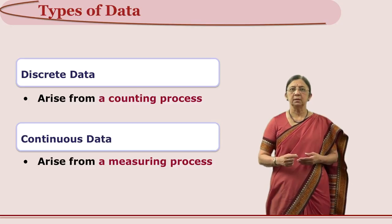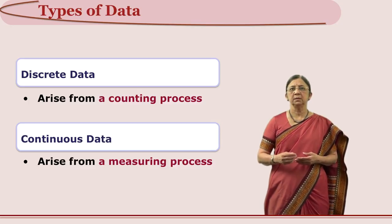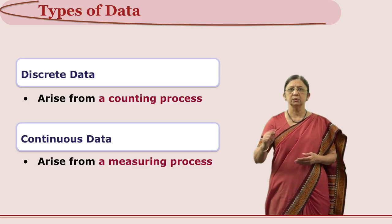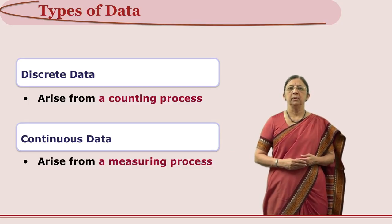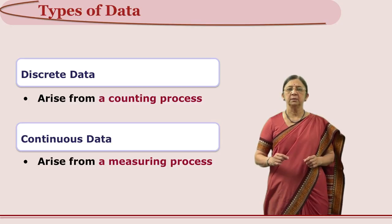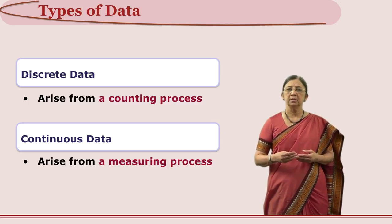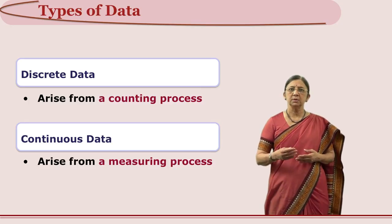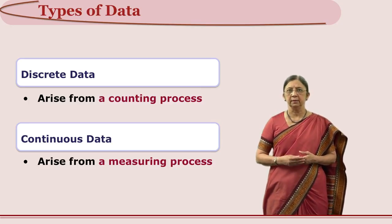Discrete data is obtained by counting — you count the schools: 1, 2, 3, 4. Whereas height or weight is measured. When we measure something we get continuous data, and when we count something we get discrete data.